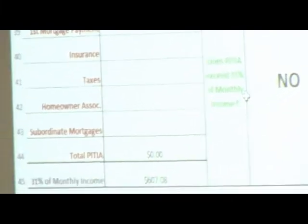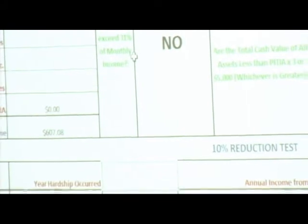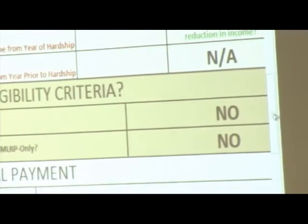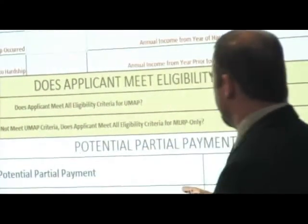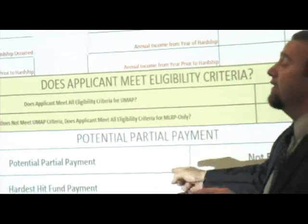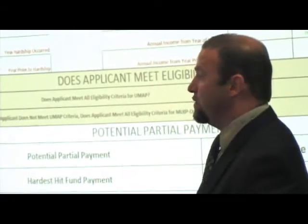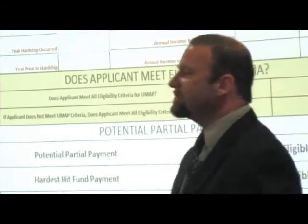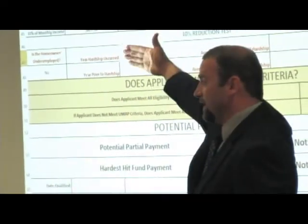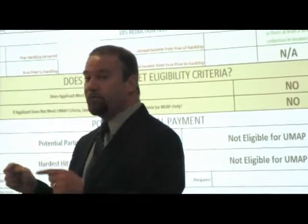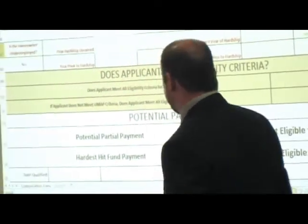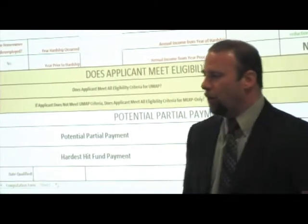Down here, some of these fields have already been filled in — the asset test. At the very bottom, there's information about the partial payment and also information about how much money Hardest Hit will pay every time a UMAP payment is made. This form is one that the advisor fills out before exporting an eligible case to Florida Housing. Florida Housing staff and underwriting staff also use it, which is why that field showing the Hardest Hit payment every month is helpful for them.